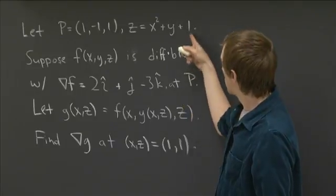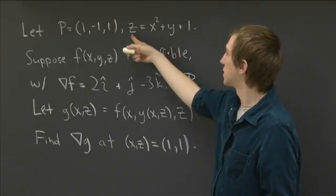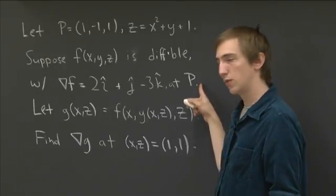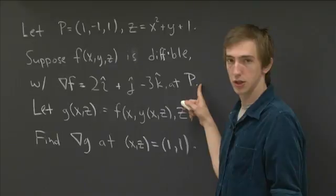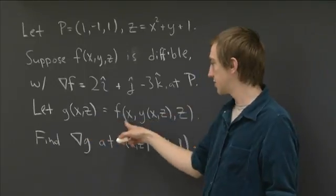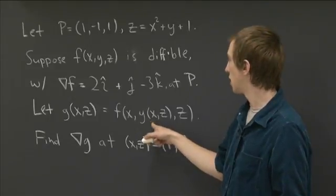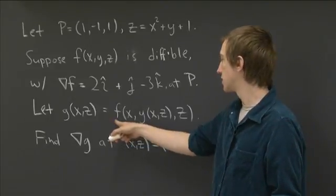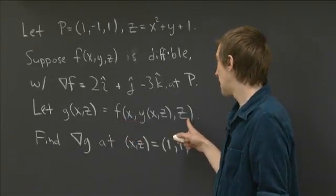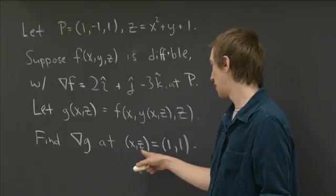We also have a relation between the variables — x, y, and z aren't unrelated. They're related by this constraint that z = x² + y + 1. With this information, we want to compute the gradient of a new function g, which is a function of two variables. This function g is obtained from f by plugging in our relation for y, using the constraint to solve for y. We want to find the gradient of g at the point (1, 1).